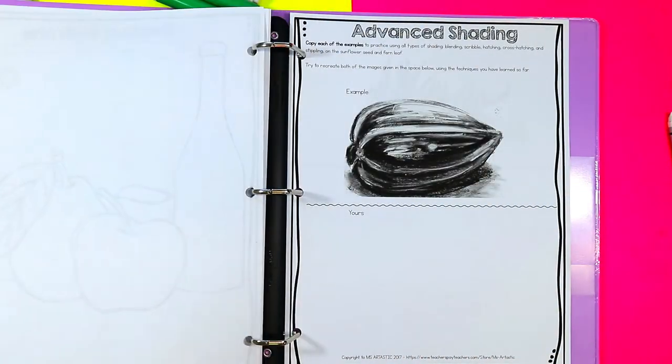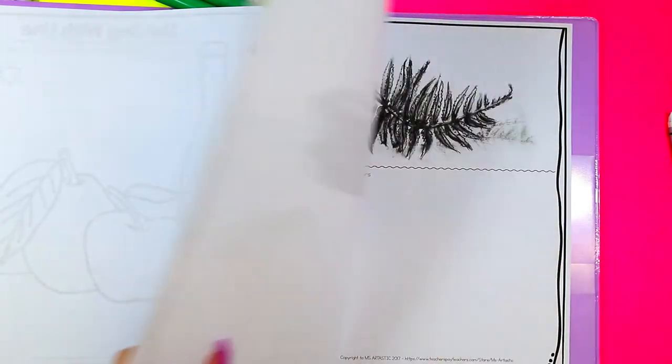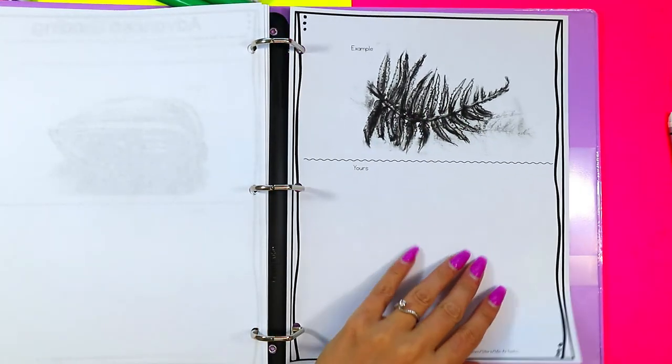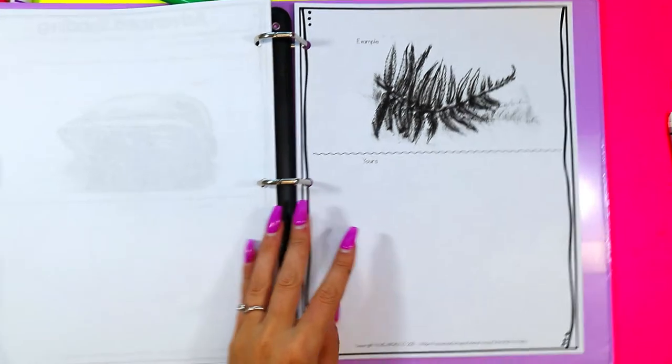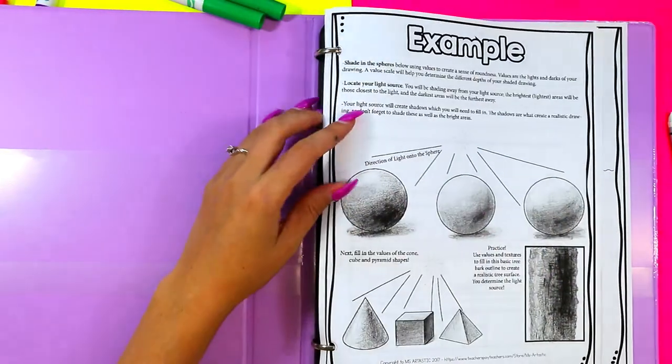There is advanced shading worksheets where it gives an example, and then they have to create it below. Same with this fern leaf. Again, just using value and shading to create it. And so many more pages. This is a really great booklet to have with must have resources.